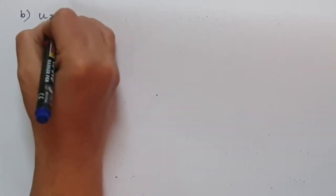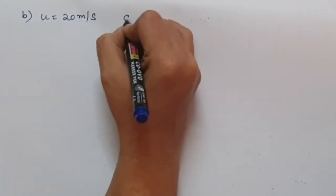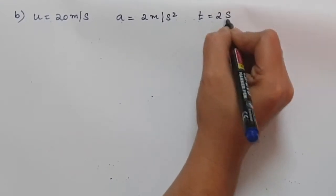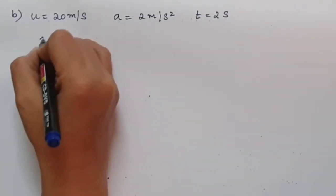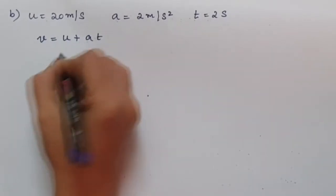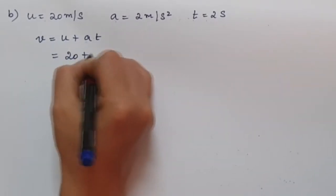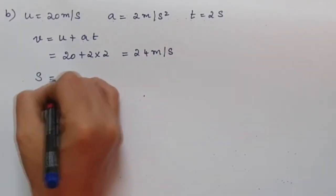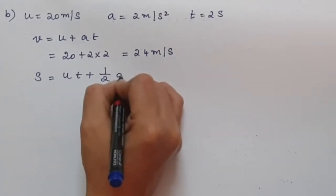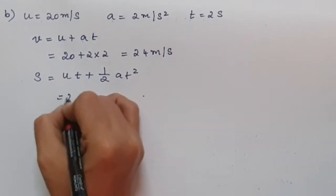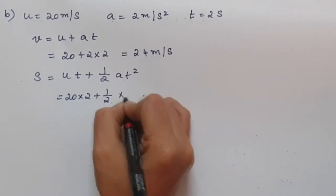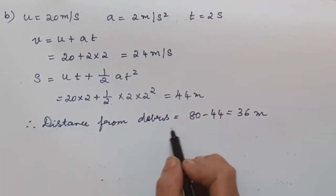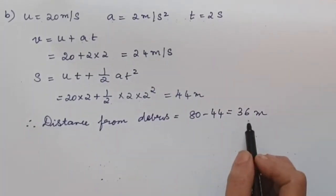For part b, u = 20 m/s, a = 2 m/s², and t = 2 seconds. The velocity after reaction time: v = u + at = 20 + 2 × 2 = 24 m/s. The distance covered during reaction time: s = ut + ½at² = 20 × 2 + ½ × 2 × 2² = 44 m. Therefore, the distance remaining to the debris is 80 − 44 = 36 m.